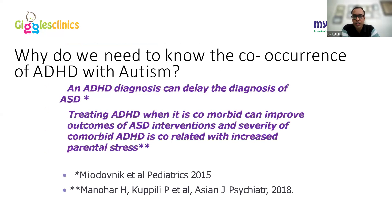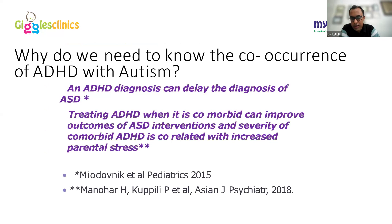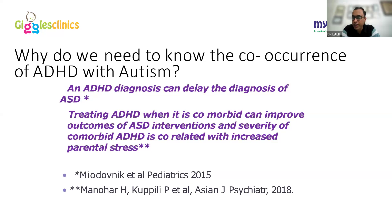Why discuss ADHD and autism together? Because an ADHD diagnosis can delay the diagnosis of ASD. Treating ADHD when it is comorbid with ASD can improve ASD intervention outcomes. The severity of comorbid ADHD is correlated with increased parental stress. The approach toward ADHD and ASD interventions differs, so missing either diagnosis can significantly impact the child's management.